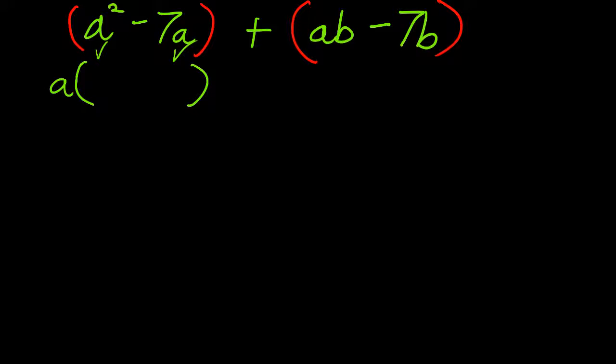A times what is a squared? Well, a times a is a squared. Copy the minus sign. A times what is 7a? Well, 7, because a times 7 is 7a. We've taken care of the first set of parentheses.